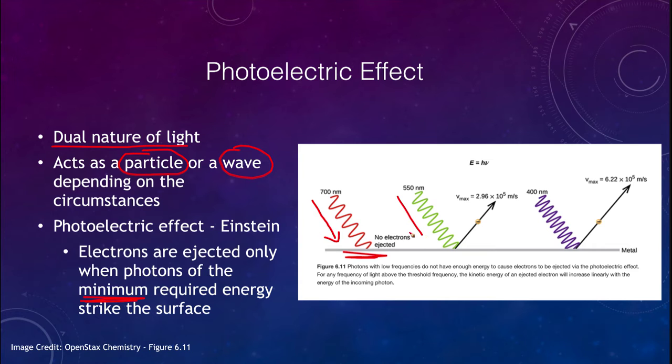However, if I send green light, which has a higher energy, or blue light, even at a lower intensity than the red, electrons can be ejected outward. This shows that light is behaving as a particle because it does not matter the intensity of the waves. If they don't meet a certain minimum energy, then they are not going to eject that electron.